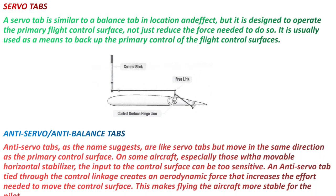For example, unlike a servo tab which moves opposite to the movement of the control surface, an anti-servo tab moves in the same direction as the control surface. It is used especially on aircraft with a movable horizontal stabilizer where controls are very sensitive, to help stabilize the aircraft. This anti-servo tab is fitted at the trailing edge of the horizontal stabilizer and moves in the same direction as the horizontal stabilizer.